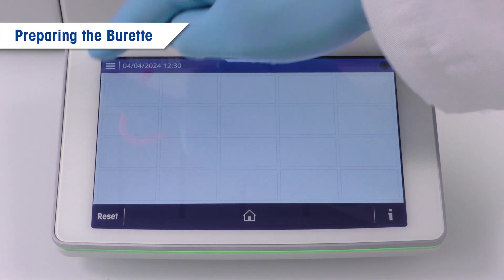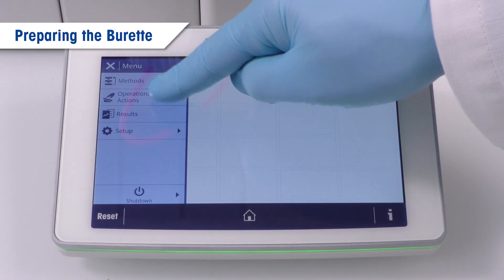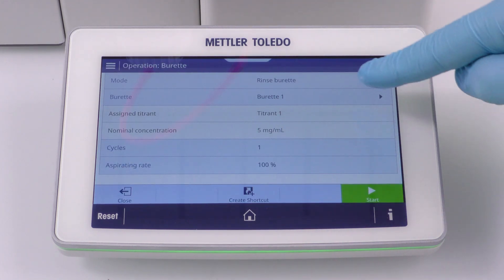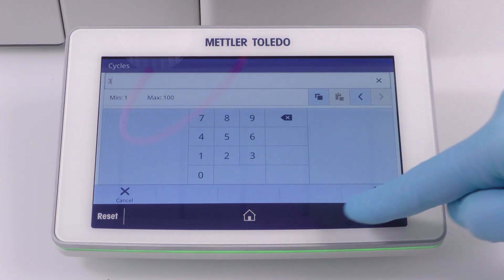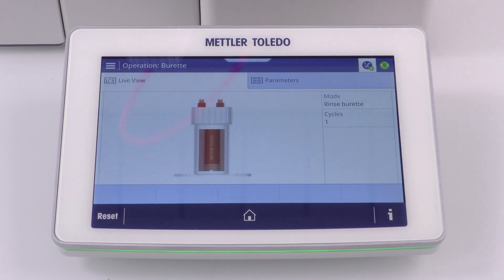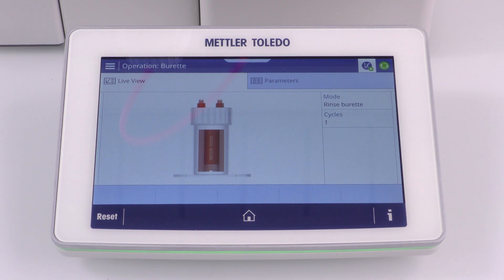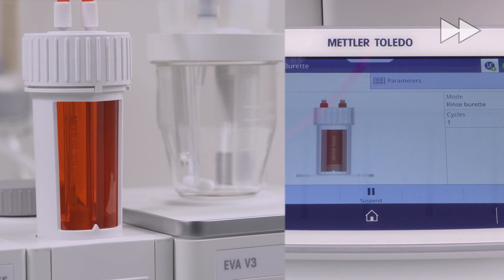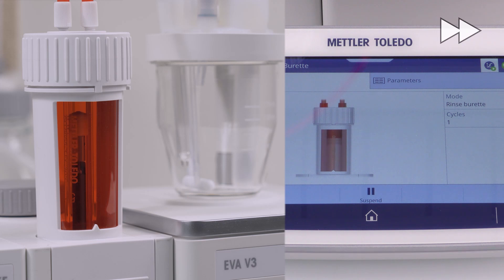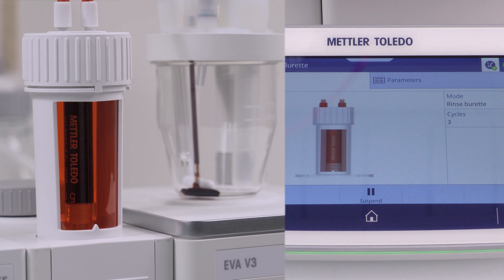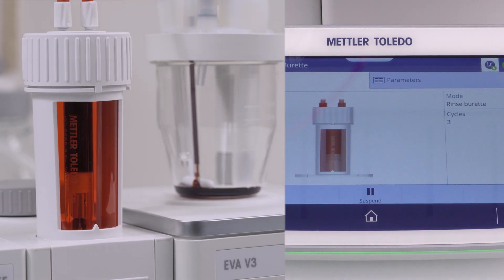After finishing the resource setup, we need to fill our burette with KF titrant. Under operation, action, burette, you will find the option to rinse the burette. Choose three cycles and stop it manually when the titrant flows out of the tube into the cell. Make sure that there are no air bubbles in the burette or the tubes. If there are, fasten the tubes more tightly and rinse the bubbles out.